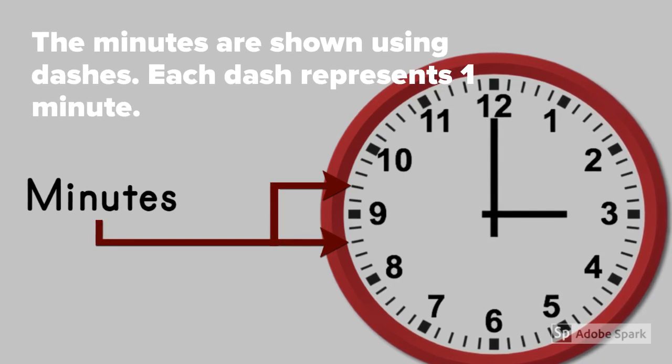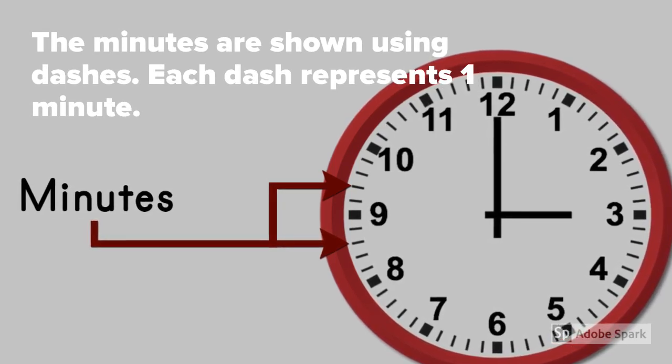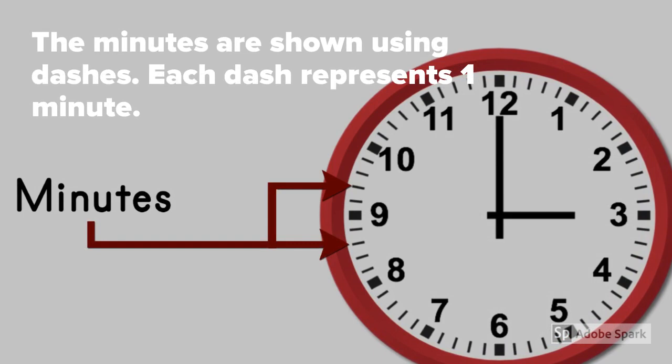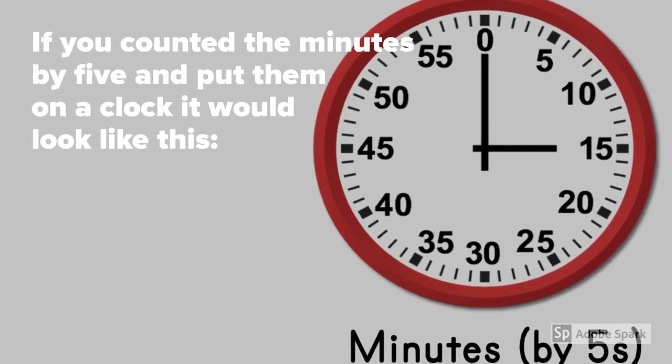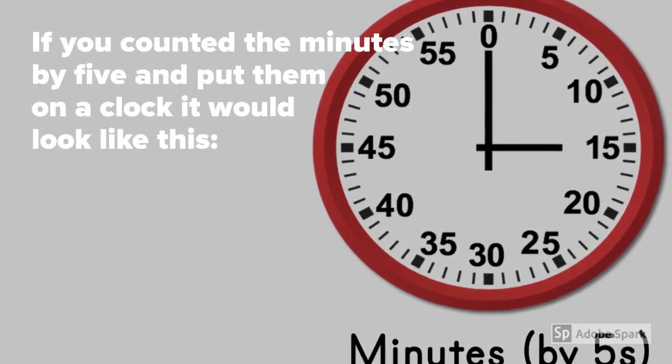On an analog clock, the minutes are shown using dashes. Each dash represents one minute. If you counted the minutes by five and put them on a clock, it would look like this.